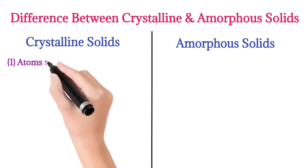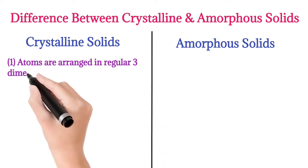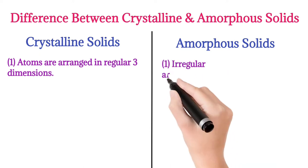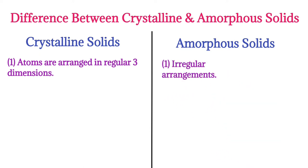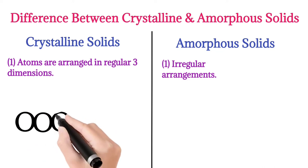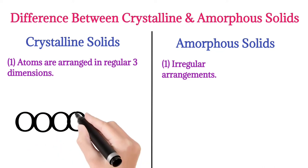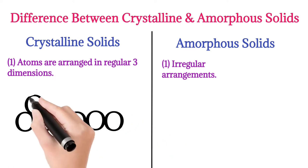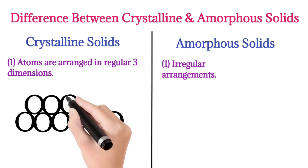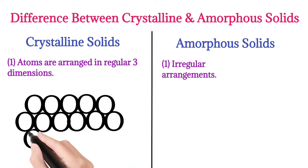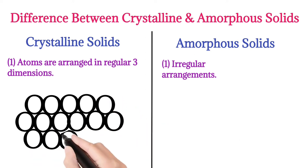The first point: in the case of crystalline solid, the atoms are arranged in a regular three-dimensional way. We see in the picture here that all the atoms are arranged in a regular manner with no extra space between them.